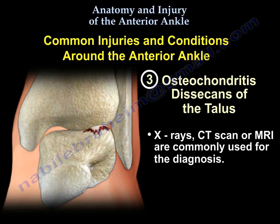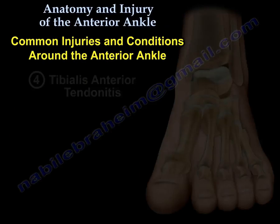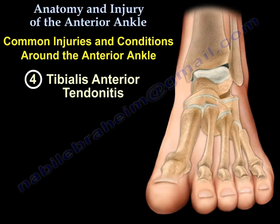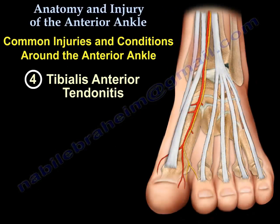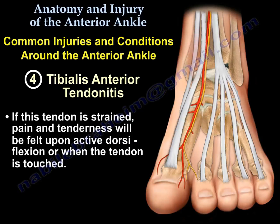The fourth condition is tibialis anterior tendinitis, an overuse condition commonly seen in runners. It is a common injury that usually accompanies anterior shin splints. If the tendon is strained, pain and tendinitis will be felt upon active dorsiflexion or when the tendon is touched.